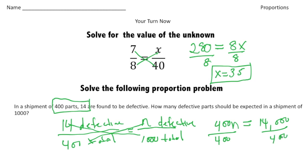And it's absolutely fine to use a calculator for that. And 14,000 divided by 400 gives us 35. So actually we have the same answer for both problems. So out of 1000 parts, we can expect 35 to be defective.